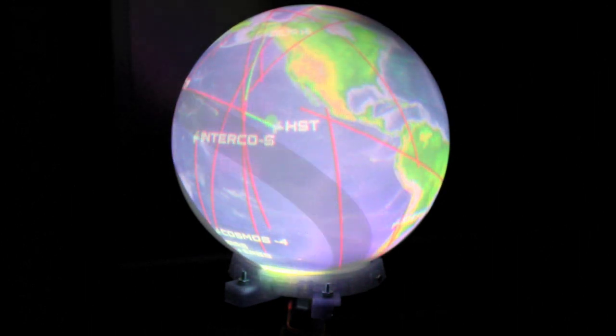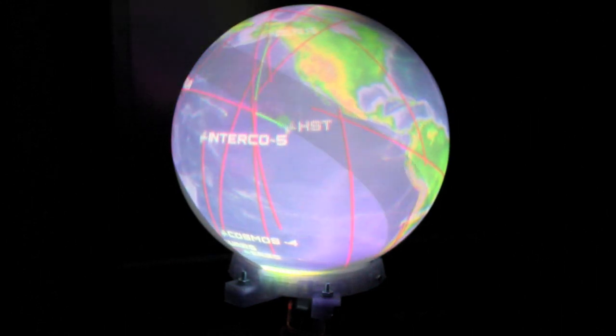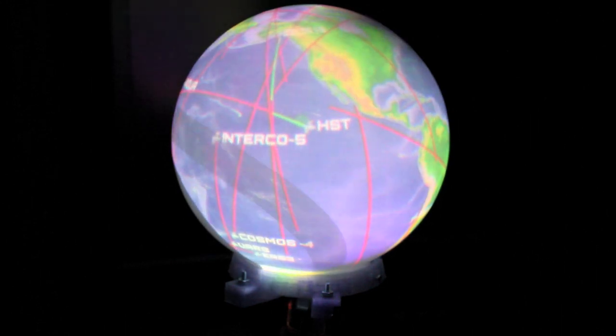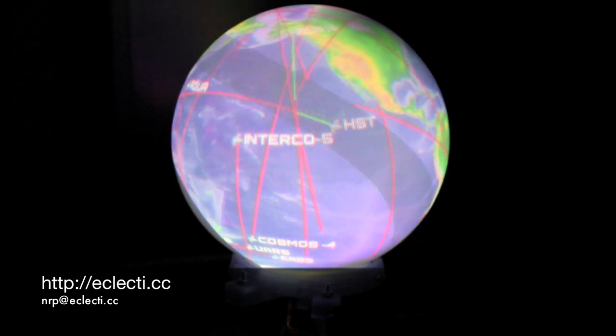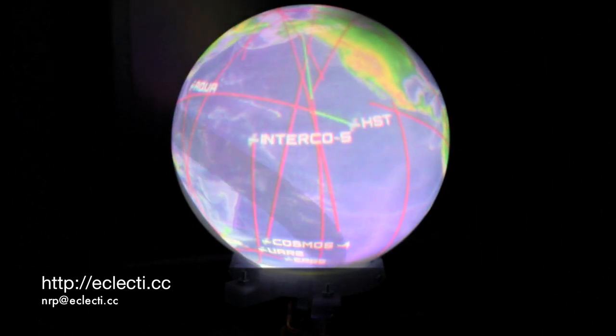The satellite tracking data for this is coming from a predict server running on the local network. It's being pulled once a second for new data. Code for this project and information on how to build a Snowglobe are available on my website.